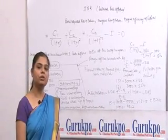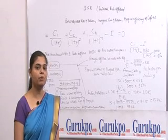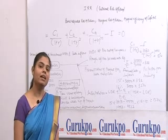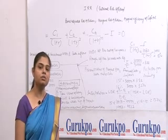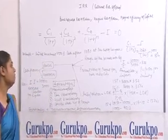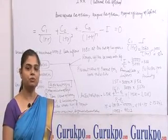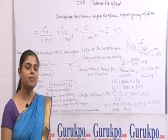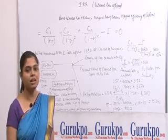In even cash inflows, the same cash inflows occur throughout the whole life of the project. For example, in the first year we earn 2000 rupees, in the second year we also earn 2000 rupees, and in the third year we also earn 2000 rupees. In uneven cash flows, we earn different cash inflows each year. For example, first year 2000 rupees, second year maybe 5000 rupees, and third year maybe 10,000 or 15,000 rupees.